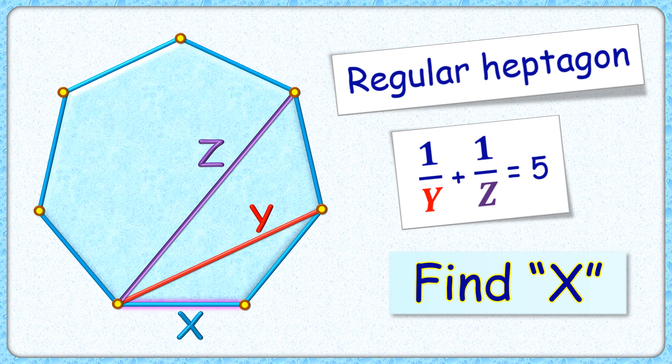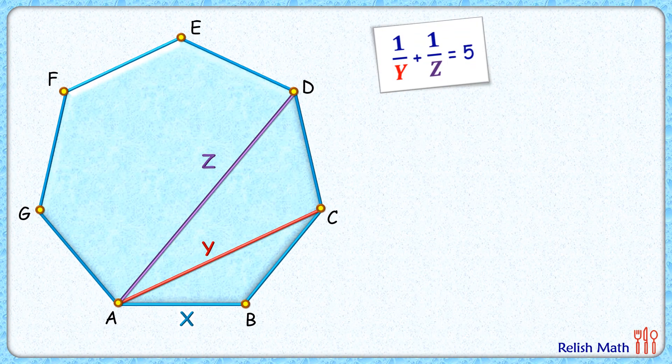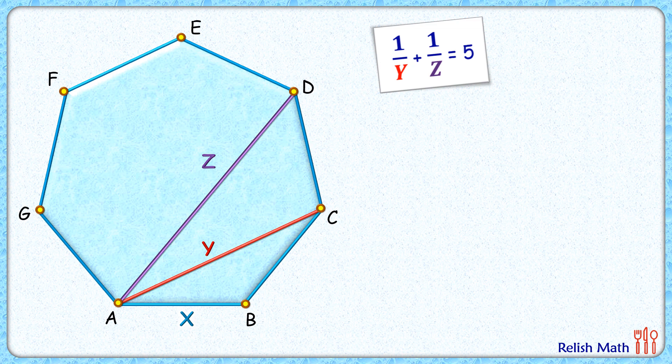Let's check this unexpectedly easy solution. The side length of this regular heptagon is x centimeters, so BC, CD, DE—all will be x centimeters. The diagonal length EC will by symmetry be the same as AC, which is y centimeters. Similarly, diagonal AE will be the same as AD, which is z centimeters.